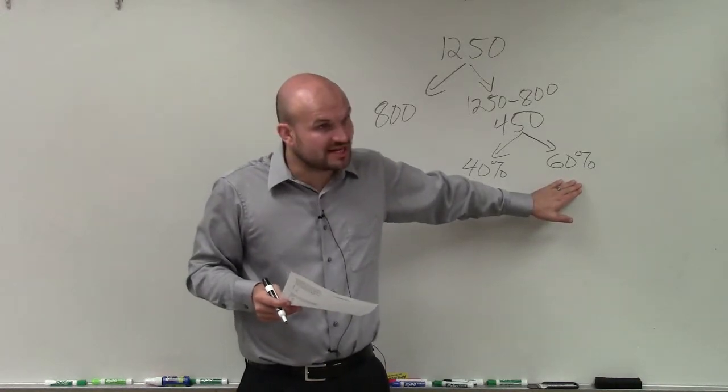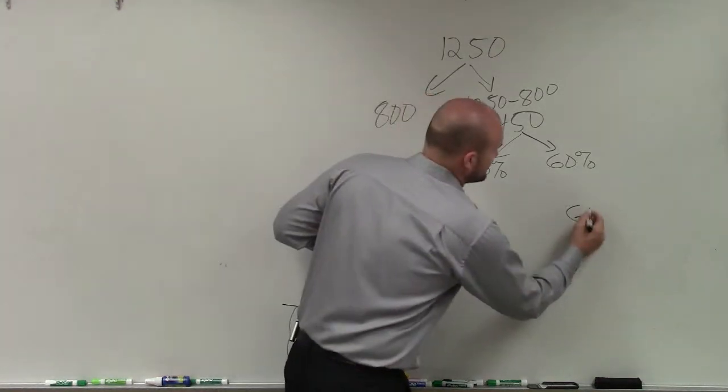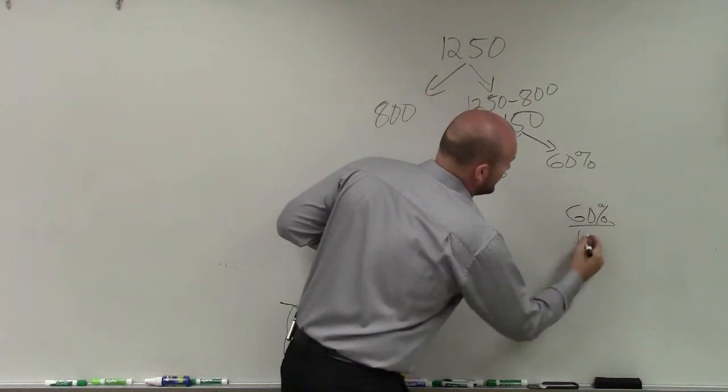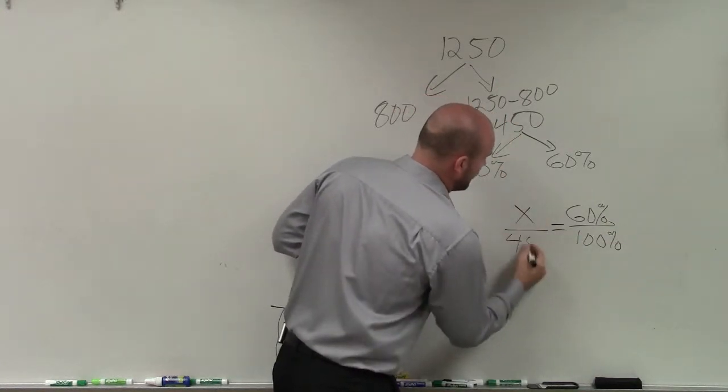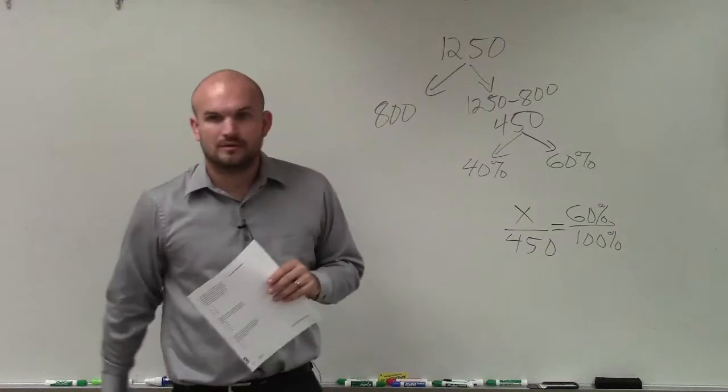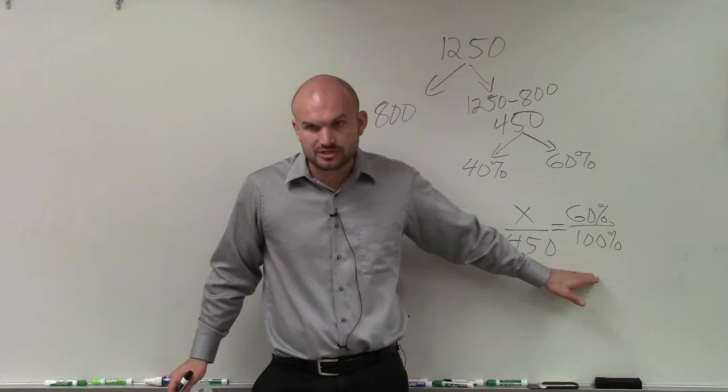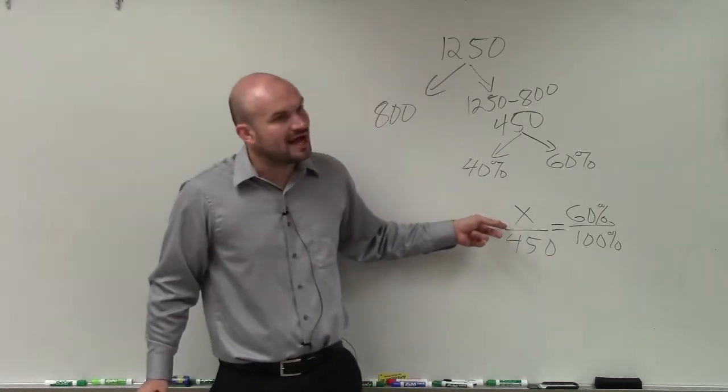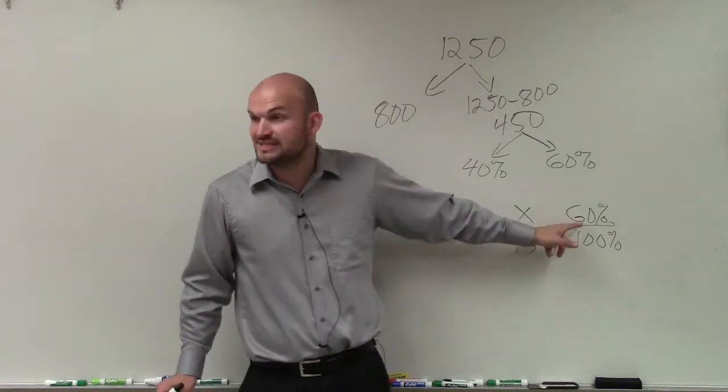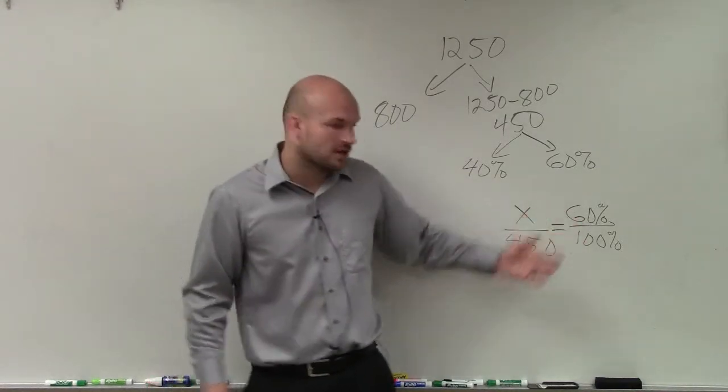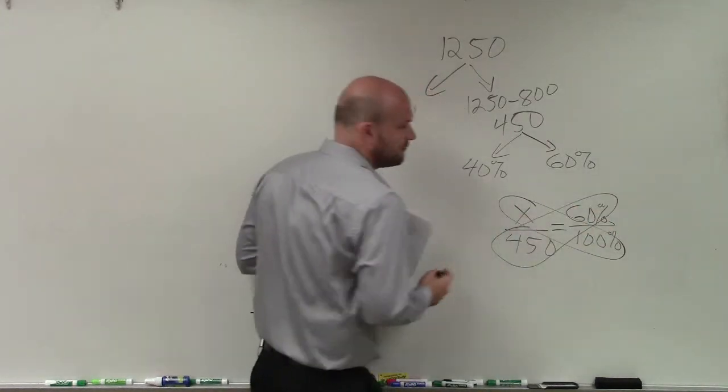So going back to percents, we can always create our proportion. 60% out of 100% is equal to how many people out of 450. We've gone over percents. When we have percents, look to create our proportion. And we're trying to figure out x, which is the number of people out of 450 that are undecided, where we know it's going to be 60% of them. You could obviously simplify this, apply cross multiplication, and so forth.